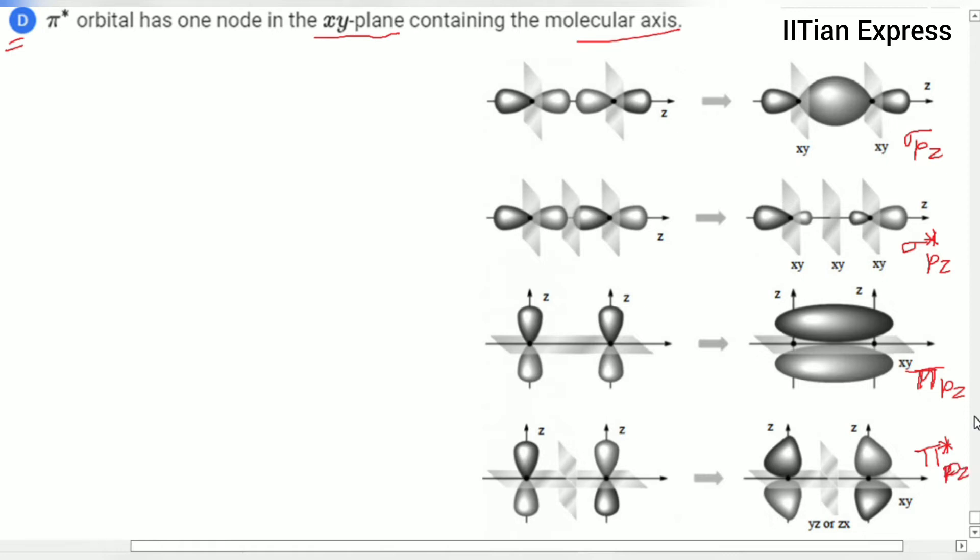So let us see - for the sigma, we are having two nodal planes in the xy-plane, the first one and the second one. So according to this, option A is the correct one. Now come to the sigma star - here we are having three nodes in the xy-plane, so option B is incorrect.